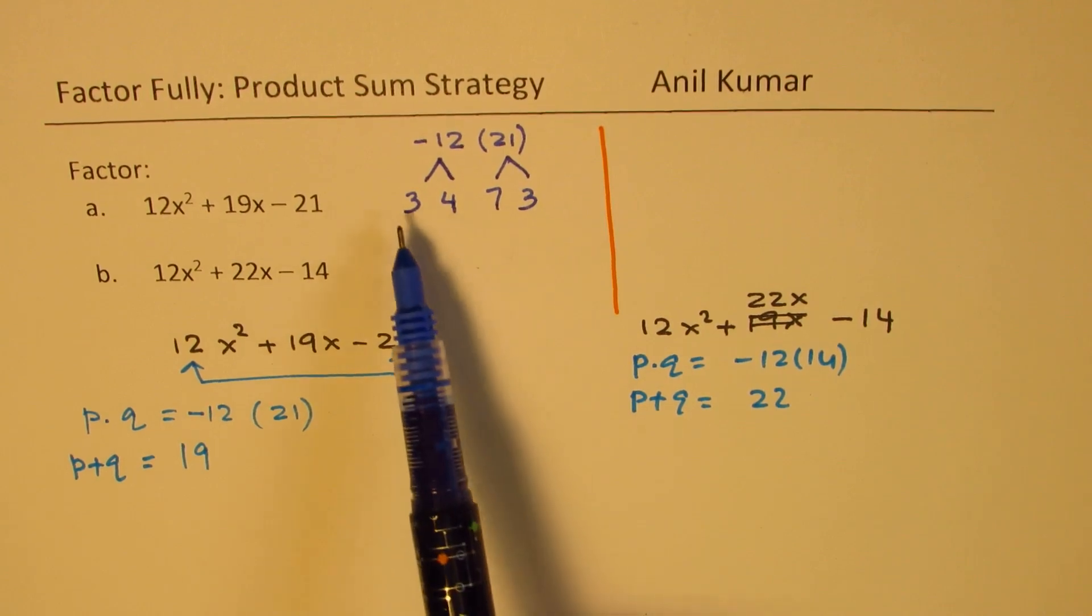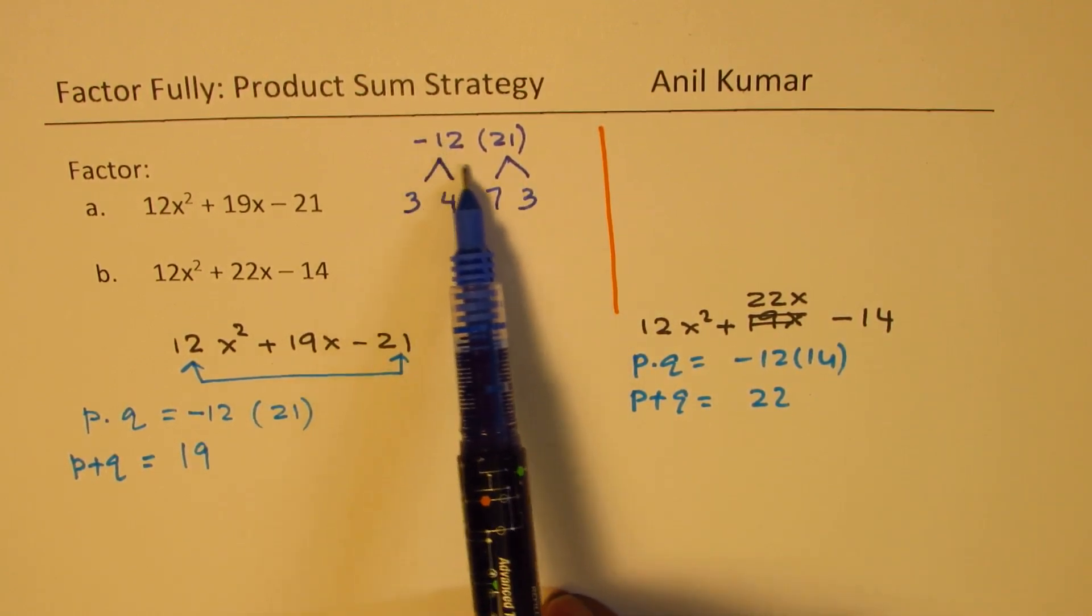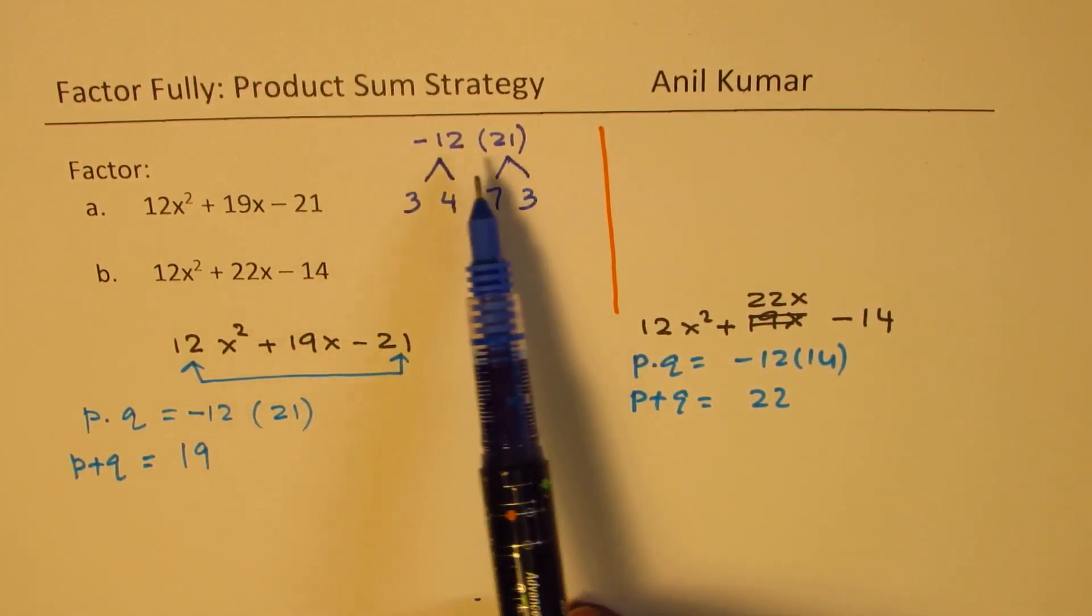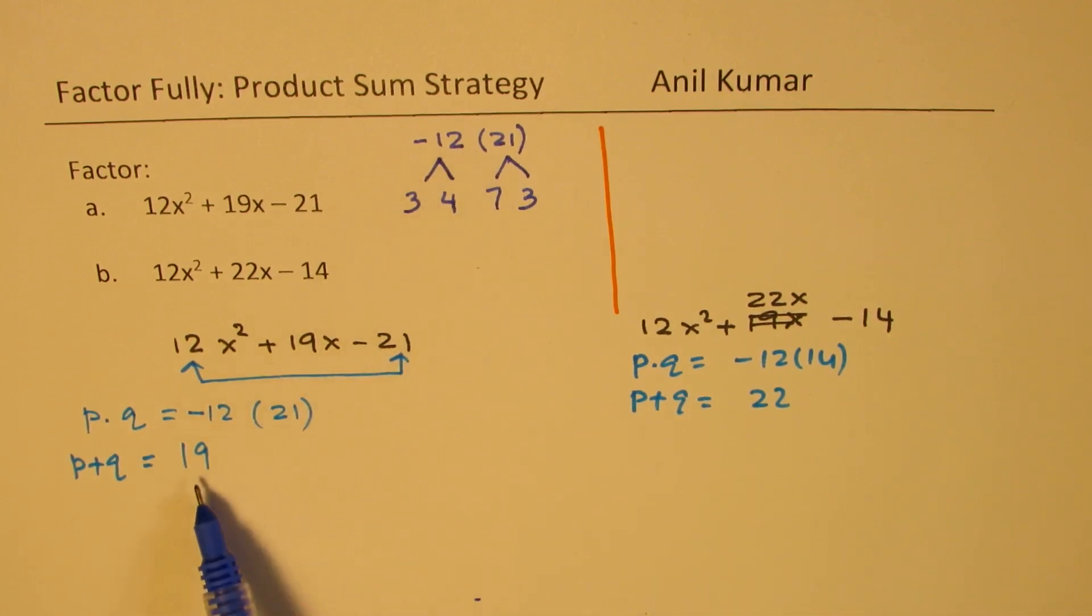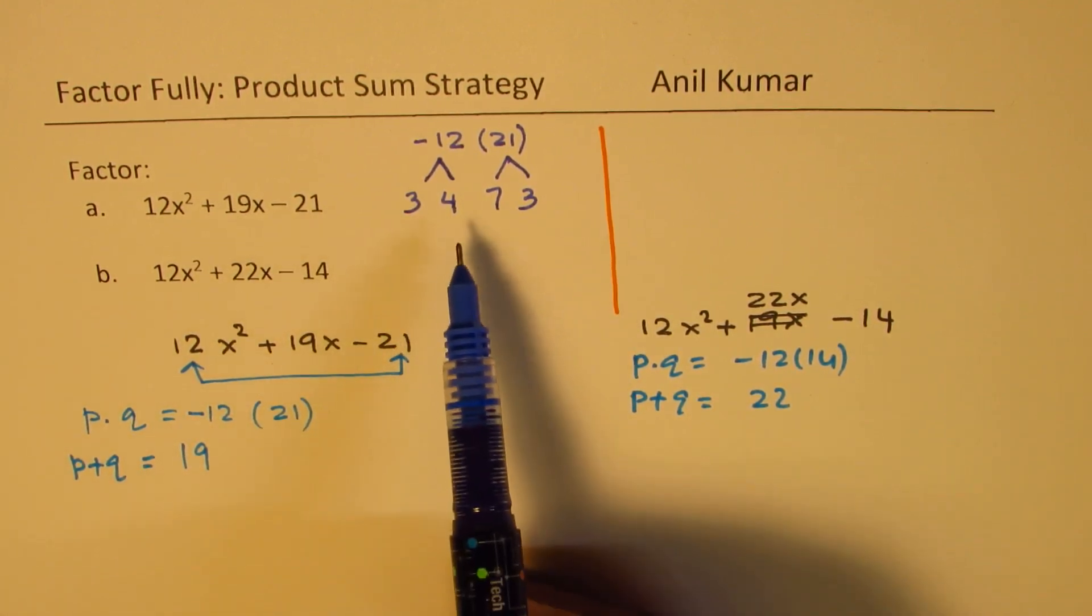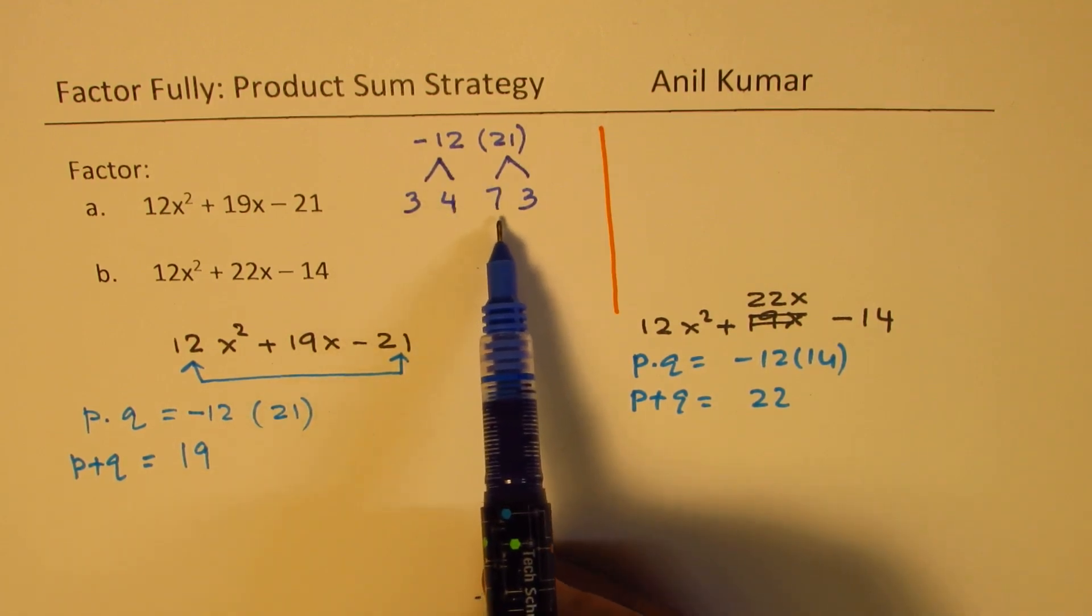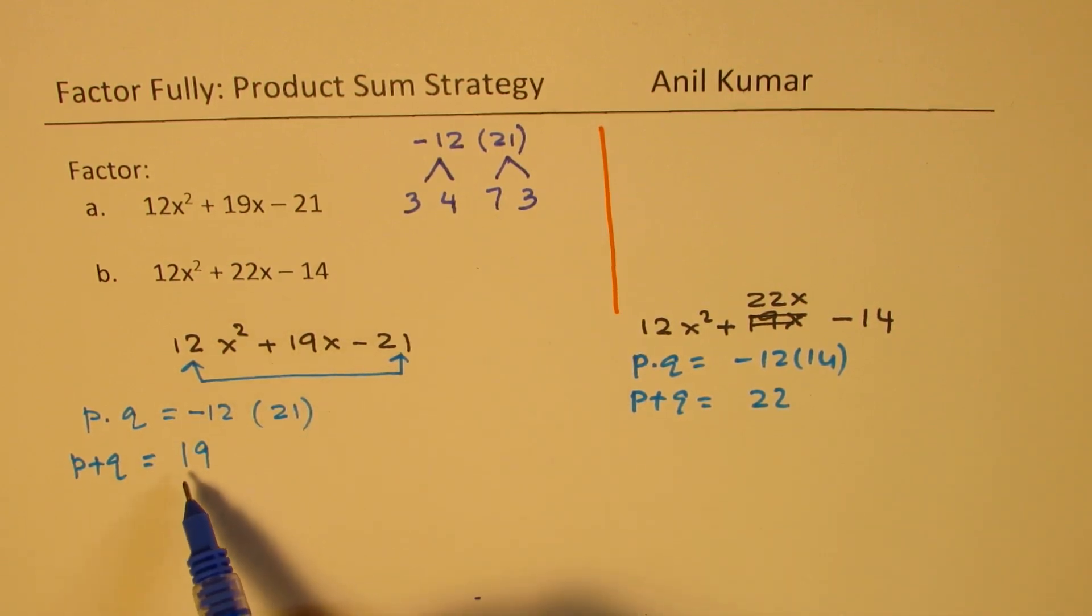Now, when you multiply these numbers, you'll always get the product. So that part is clear. Now we have to only think about the sum of 19. So, of course, big numbers are positive and the small number we have to take as negative.